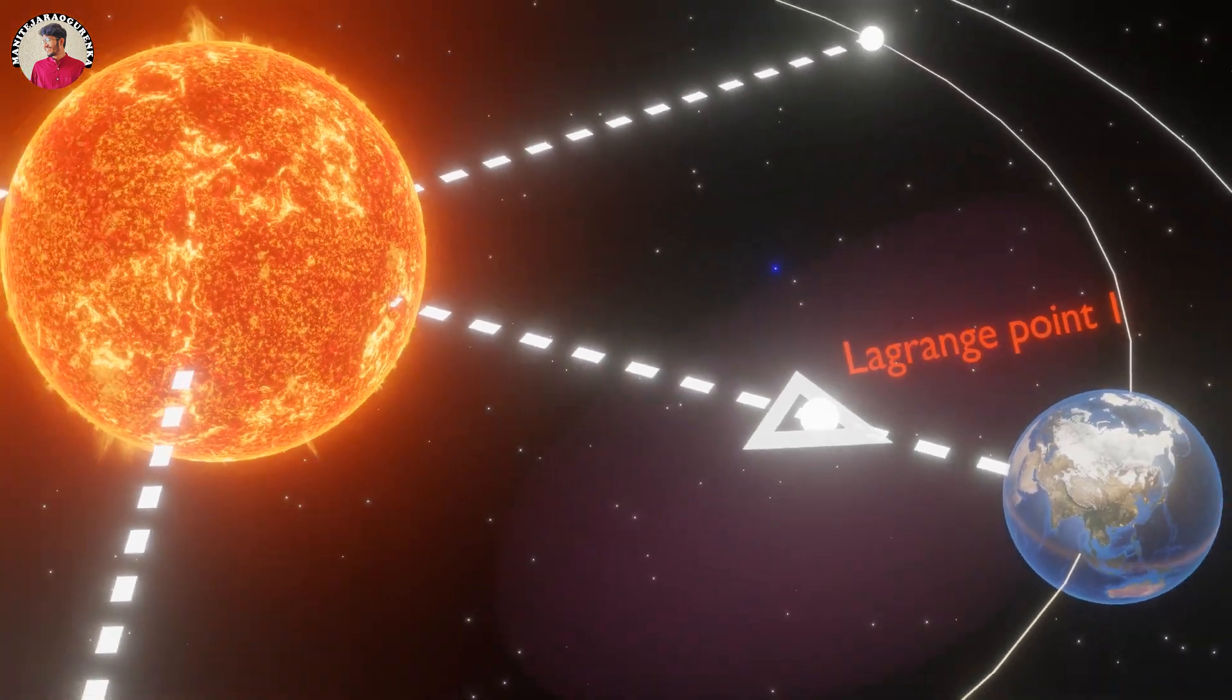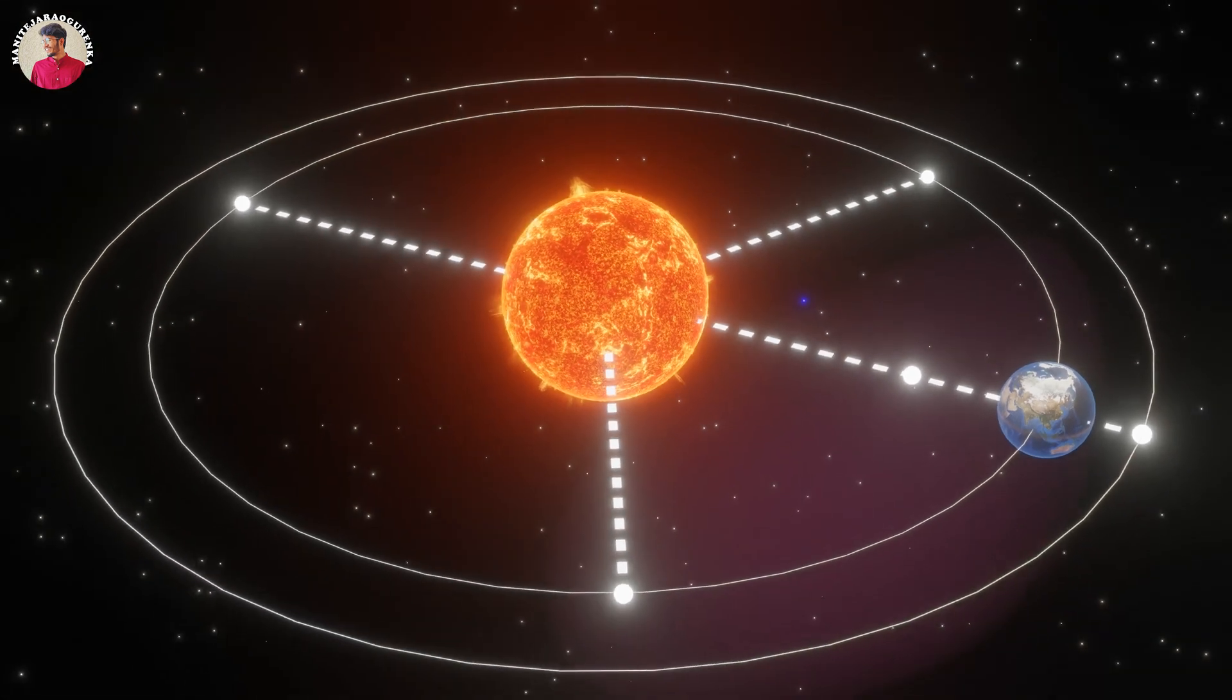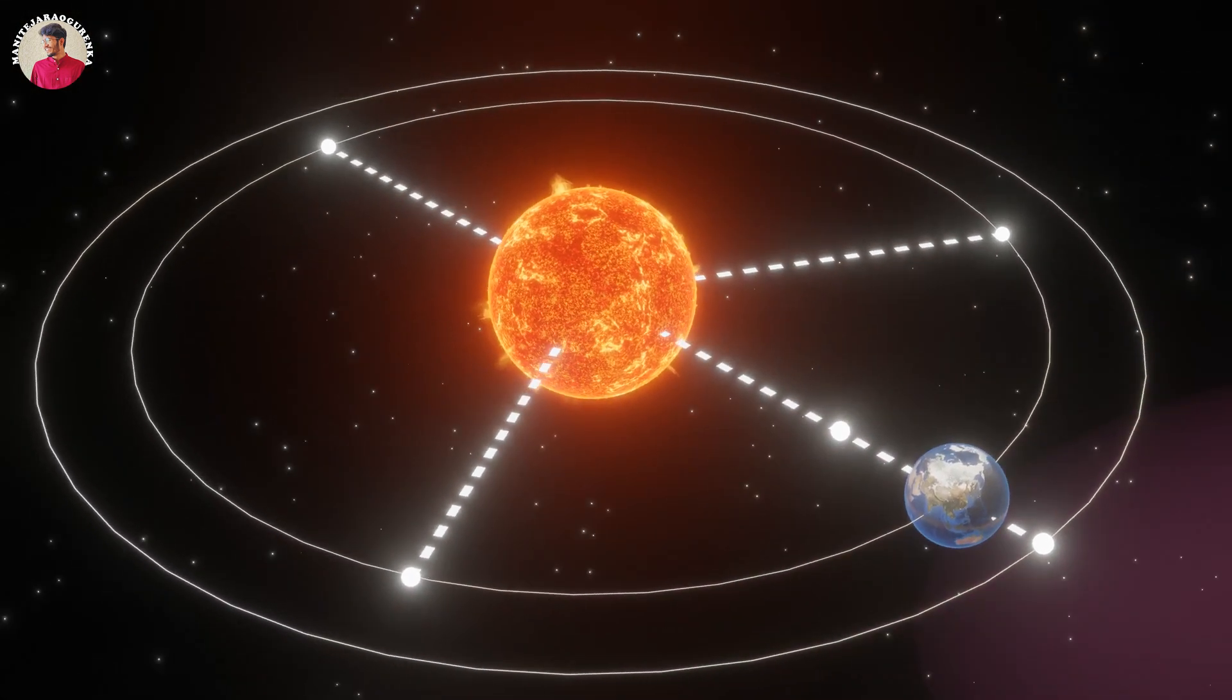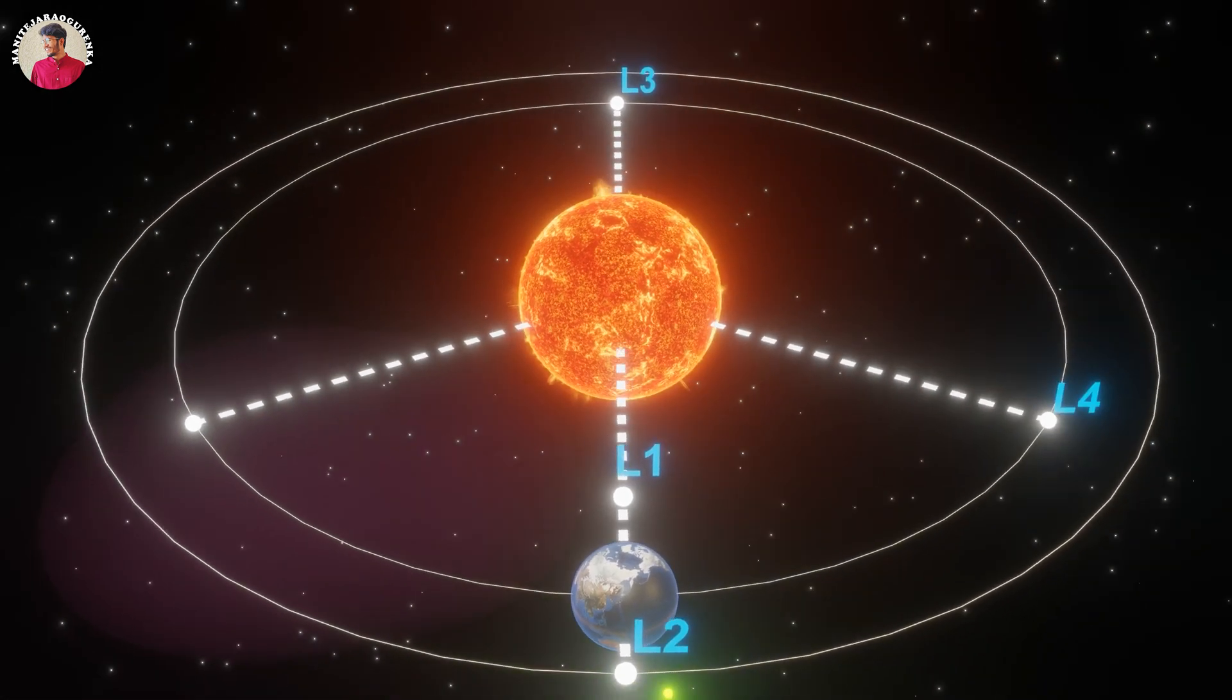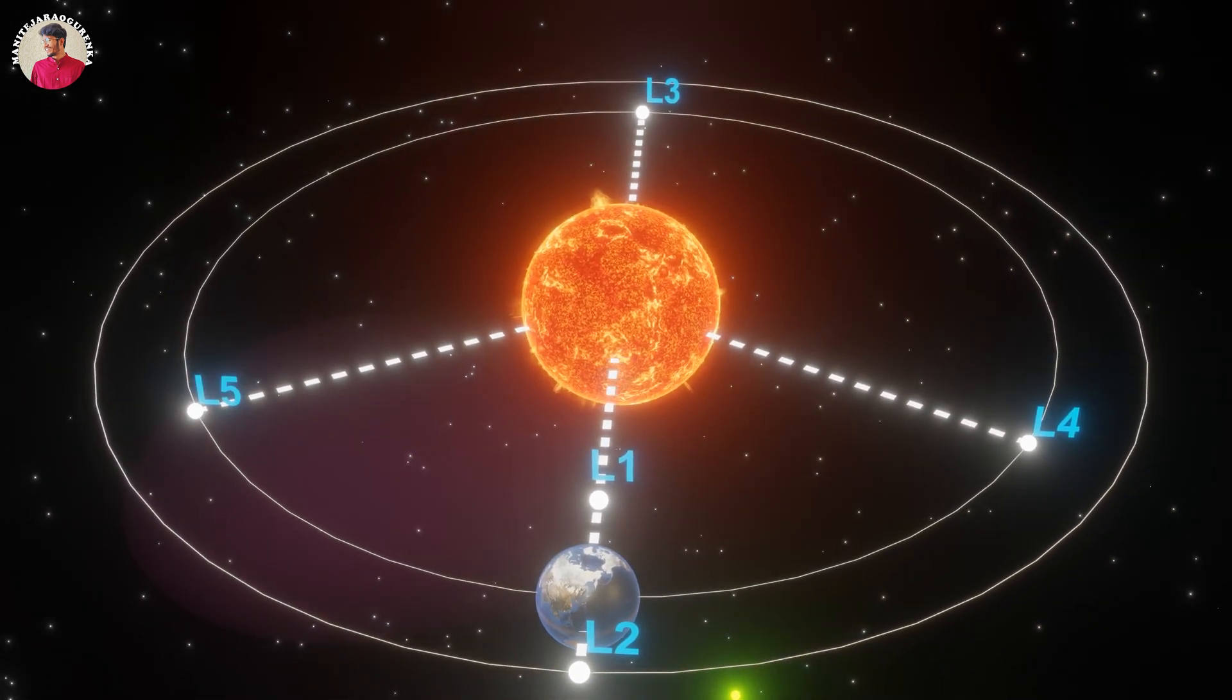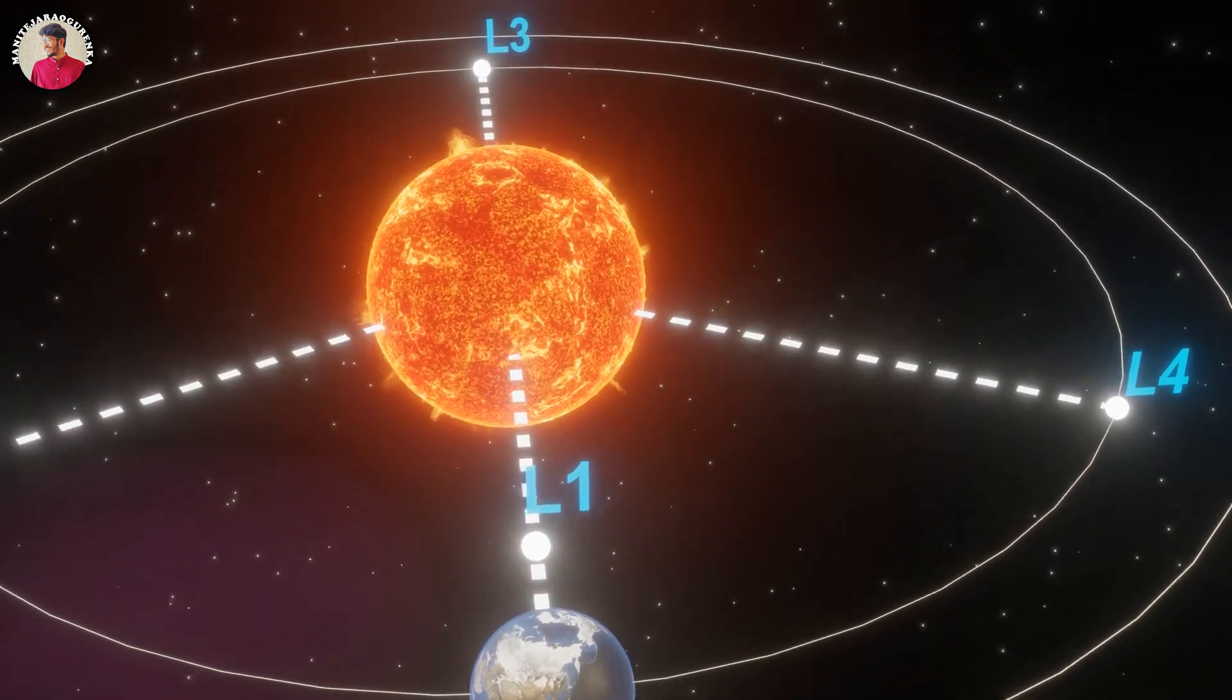For two-body gravitational systems, there are a total of five Lagrange points, denoted as L1, L2, L3, L4, and L5. Lagrange Point 1 lies between the Sun and Earth lines.